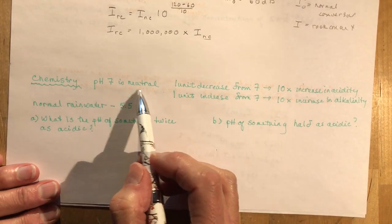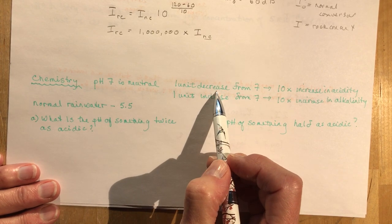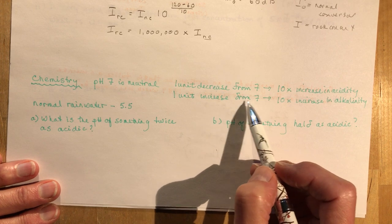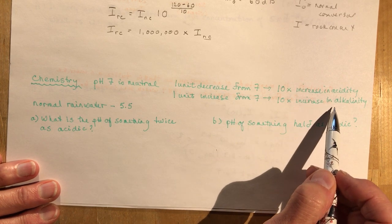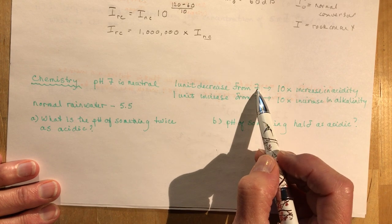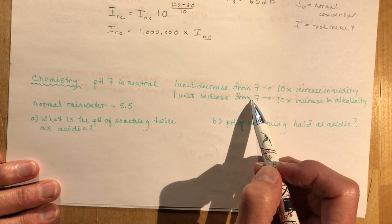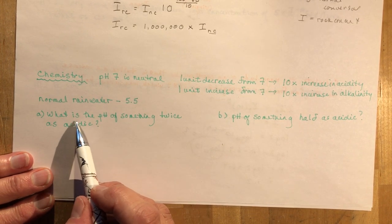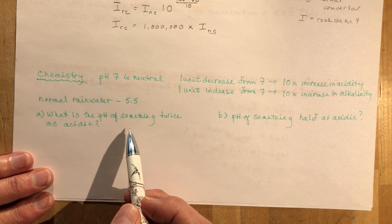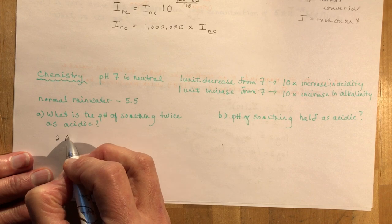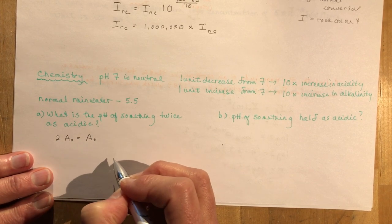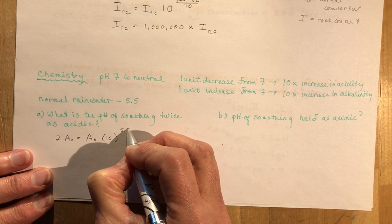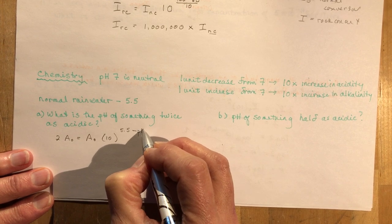We have pH of 7 is neutral. Every one unit decrease is a tenfold increase in acidity. If you decrease, so 6 is more acidic than 7 and 8 is more alkaline than 7. The question says that normal rainwater is slightly acidic at 5.5. What is the pH of something twice as acidic? I want twice the acidity of normal rainwater, and we have 10 to the power of 5.5, which is the pH of rainwater, minus the pH of what we're trying to find.